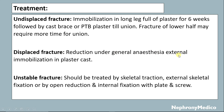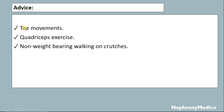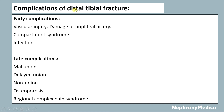In case of displaced fracture, reduction under anesthesia with external immobilization in plaster cast is done. For unstable fractures, treatment should be by skeletal traction, external skeletal fixation, or open reduction and internal fixation with plate and screw. Good movement, quadriceps exercises, and non-weight-bearing walking on crutches should be advised.